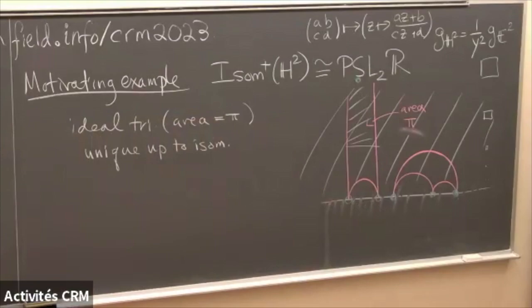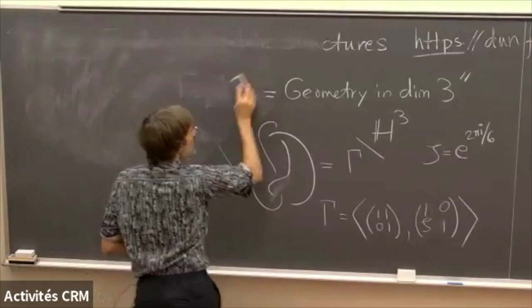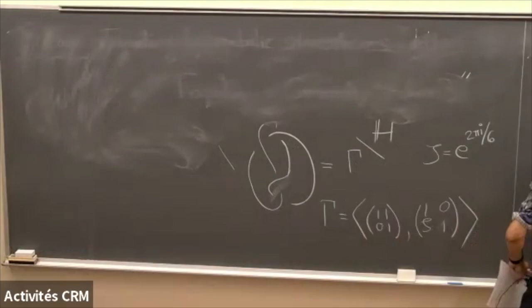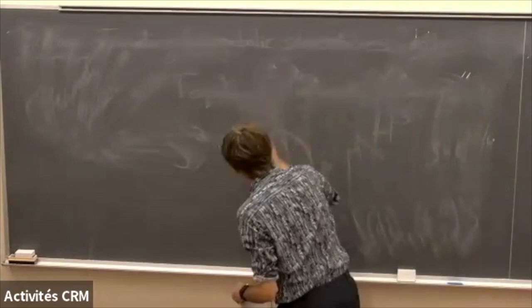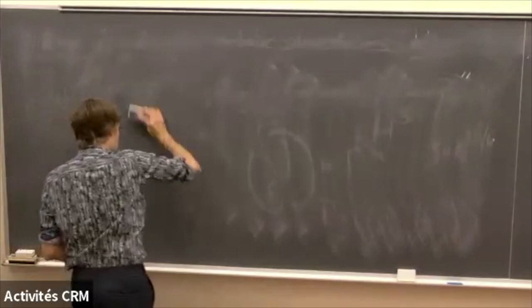I'm going to focus today on examples that are not compact but have finite volume, and I'll explain what the ends look like — something I neglected to do previously. The reason I'm not working with closed examples, which are more comforting in some sense, is that they're really just harder to describe concretely. I can actually describe some of these non-compact ones, and this is also the way that SnapPy thinks about it, using ideas of Thurston that I'm about to explain.